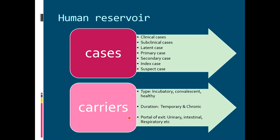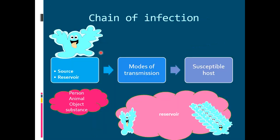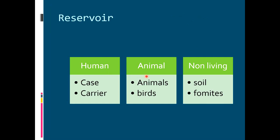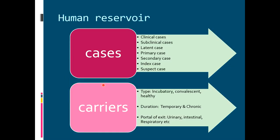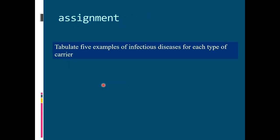To summarize, the chain of infection starts with the source or reservoir. The reservoir can be of three types: human reservoirs, animal reservoirs, and non-living reservoirs. Human reservoirs are further subdivided into cases and carriers, which we have discussed in detail. Your assignment is to tabulate five examples of infectious diseases for each type of carrier and submit it within 15 minutes of finishing the lecture.